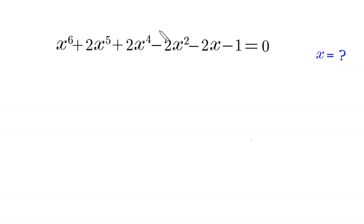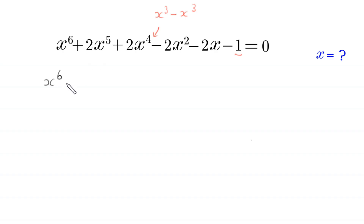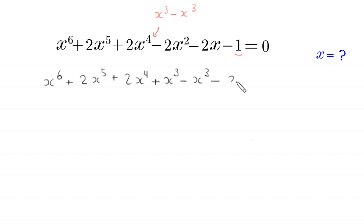We notice that in this expression we are missing the term with x cubed, and here we have a constant 1. So we add here x cubed and we subtract x cubed. So this equation will become x to the power 6 plus 2x to the power 5 plus 2x to the power 4 plus x cubed minus x cubed minus 2x squared minus 2 times x minus 1 is equal to 0.